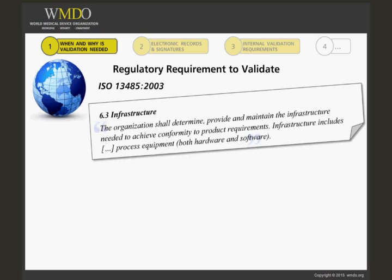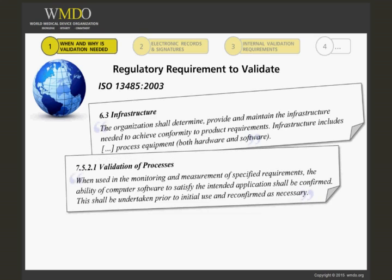Section 7.5.2.1 Validation of Processes states that when used in the monitoring and measurement of specified requirements, the ability of computer software to satisfy the intended application shall be confirmed. This shall be undertaken prior to initial use and reconfirmed as necessary.